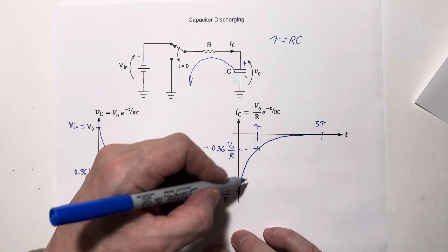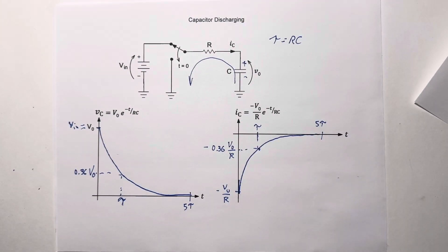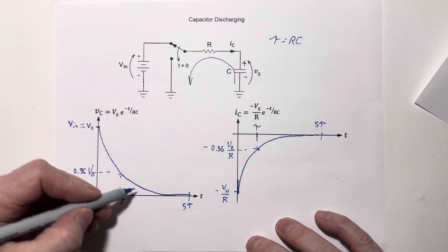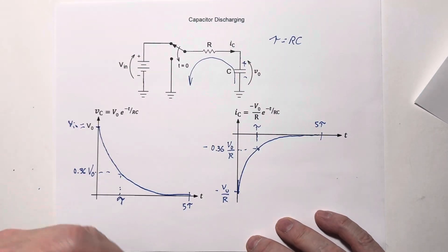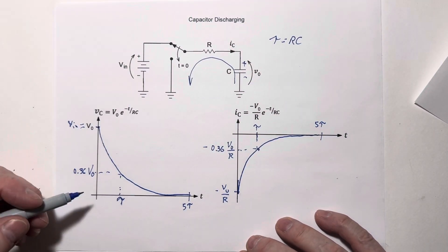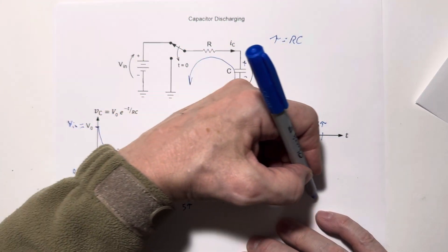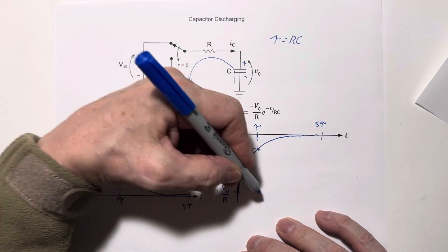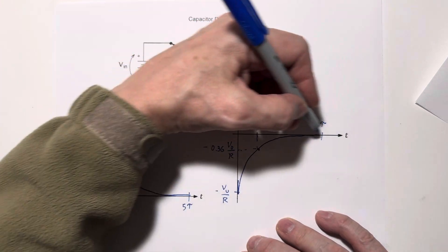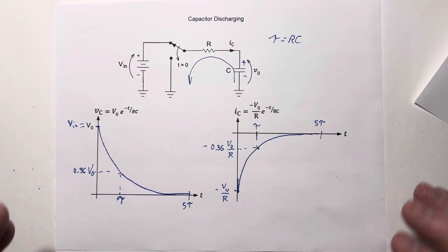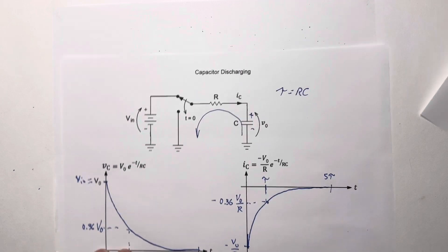We've got these exponential curves all over the place with charging and discharging — this is called the transient behavior of the capacitor or the circuit in general. This exponential behavior goes away eventually, leaving just the final steady-state values of zero volts or zero milliamps. Now let's look at an inductor.